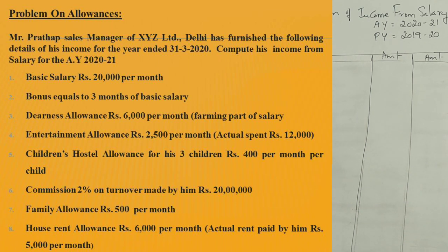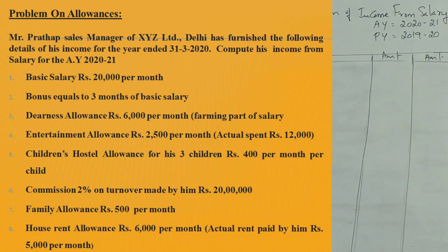Family allowance is Rs. 500 per month. HRA is Rs. 6,000 per month and actual rent paid by him is Rs. 5,000 per month. These are the details we have to use to calculate the gross salary.